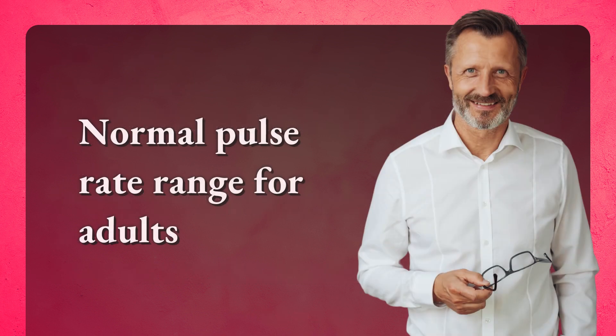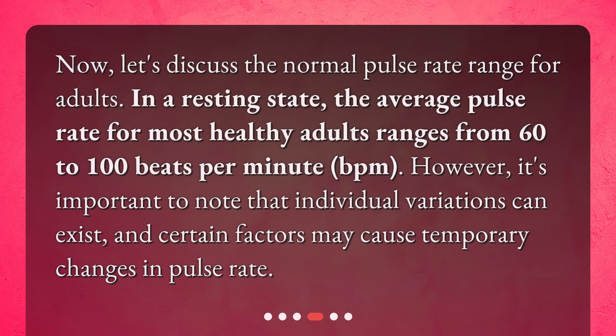Now, let's discuss the normal pulse rate range for adults. In a resting state, the average pulse rate for most healthy adults ranges from 60 to 100 beats per minute (BPM). However, it's important to note that individual variations can exist, and certain factors may cause temporary changes in pulse rate.